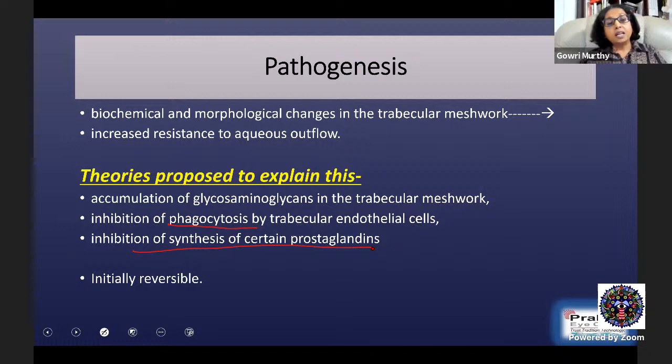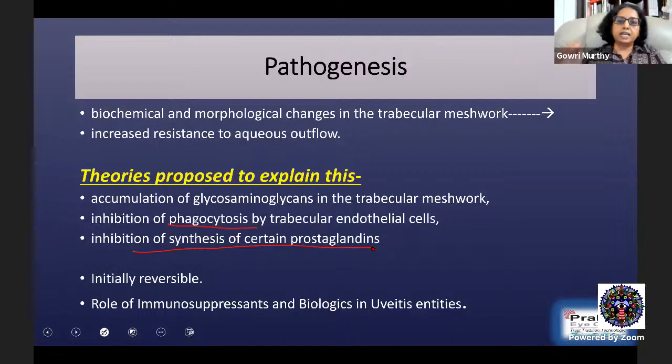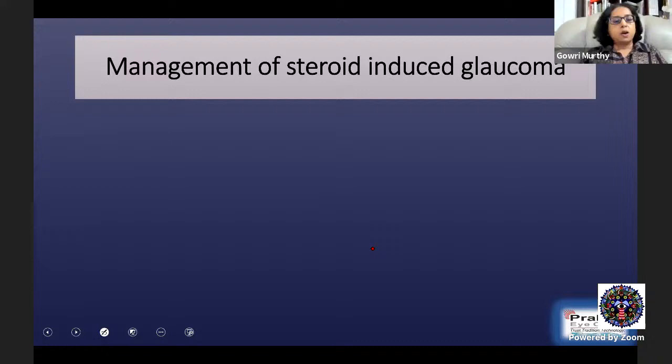A very unfortunate example is patients with vernal keratoconjunctivitis who are given topical steroids by a local doctor or pharmacist, get relief, and without consultation continue to use them. Young children can end up with secondary glaucoma with a 0.9 cup-disc ratio and an extremely damaged disc and field. Steroids should not be used indiscriminately. In uveitis specifically, the role of immunosuppressants and biologics cannot be stressed enough — encouraging the uveitis colleague to use immunosuppressant cover and biologics reduces dependence on steroids and avoids this complication.